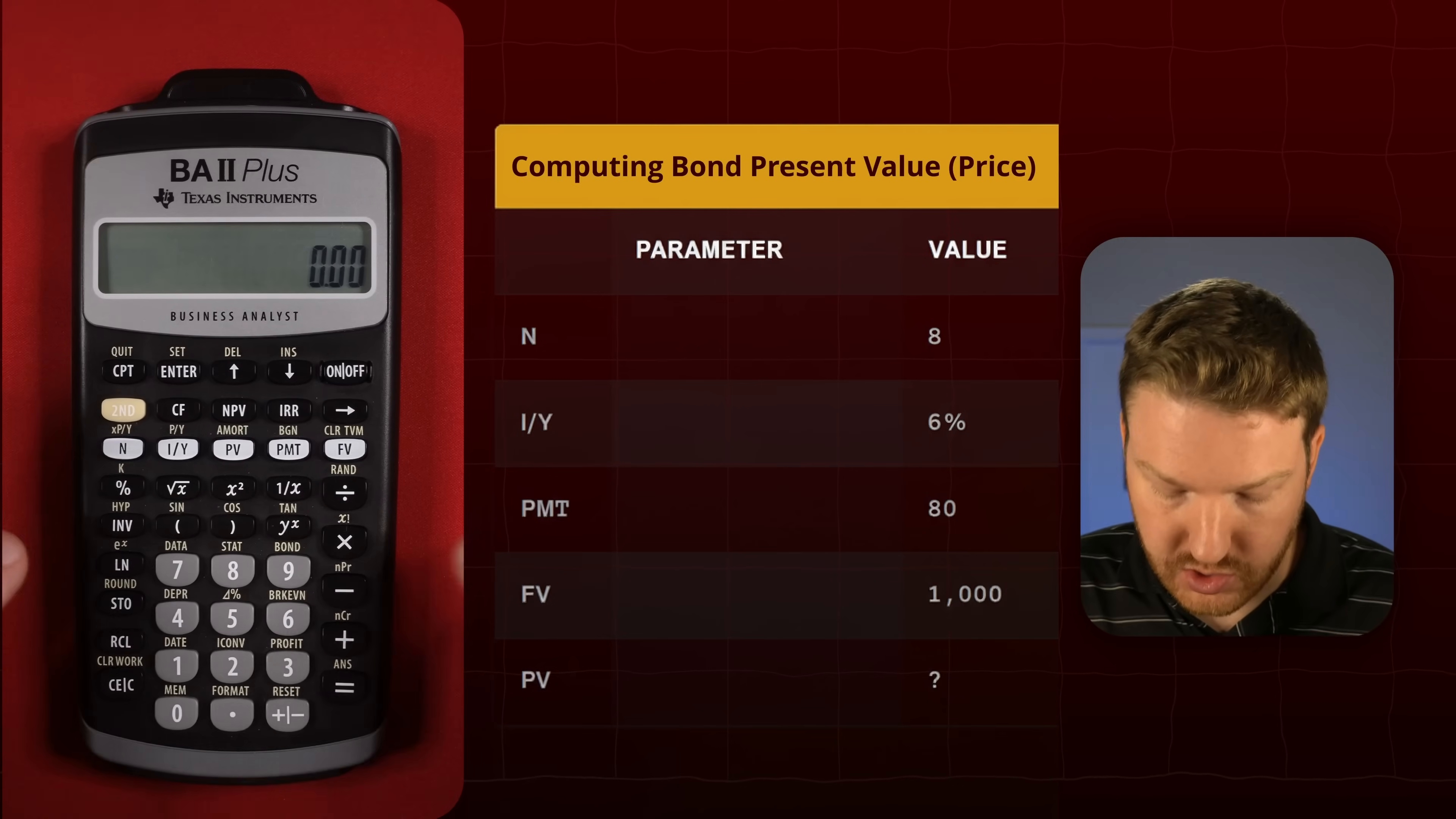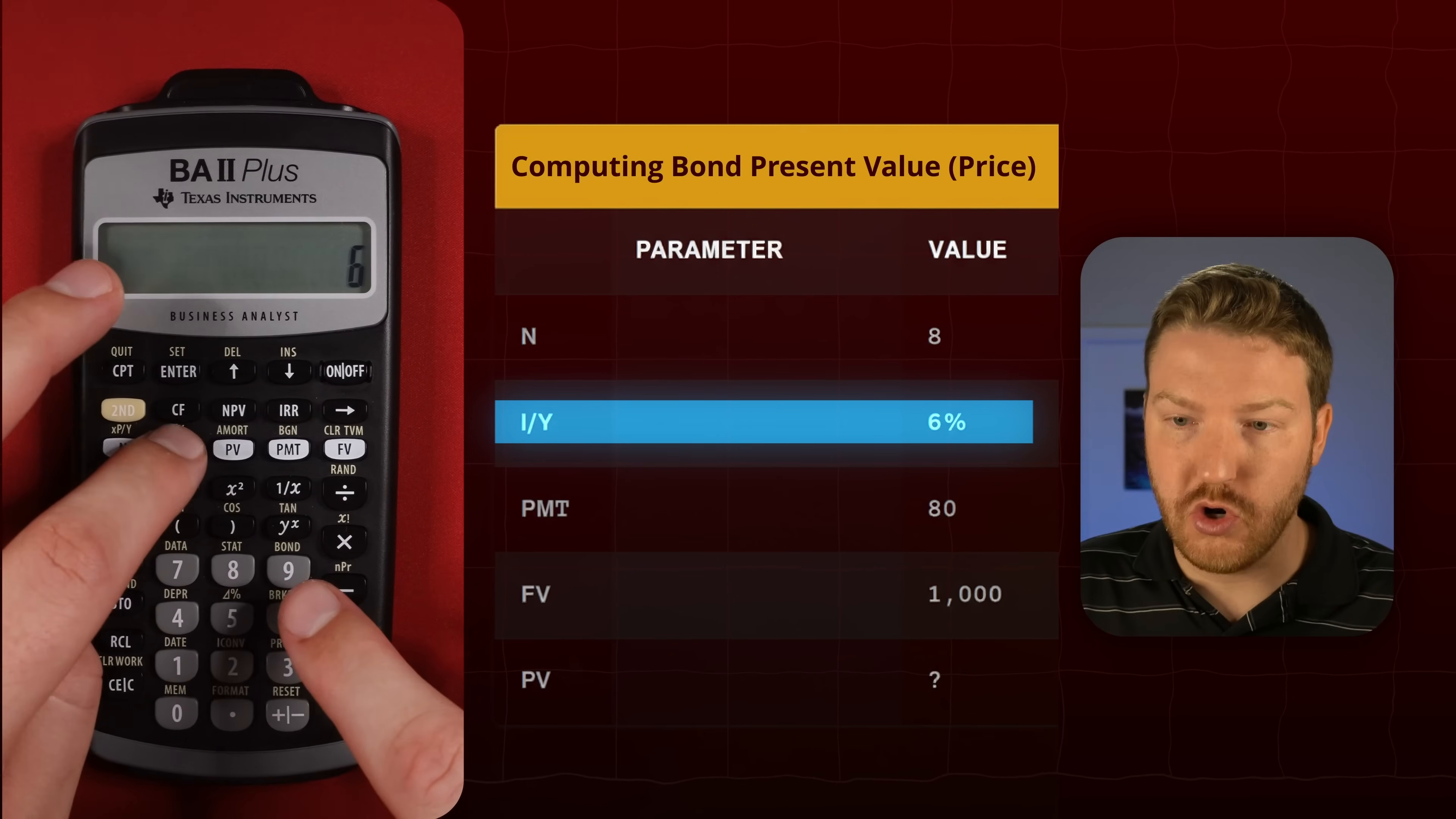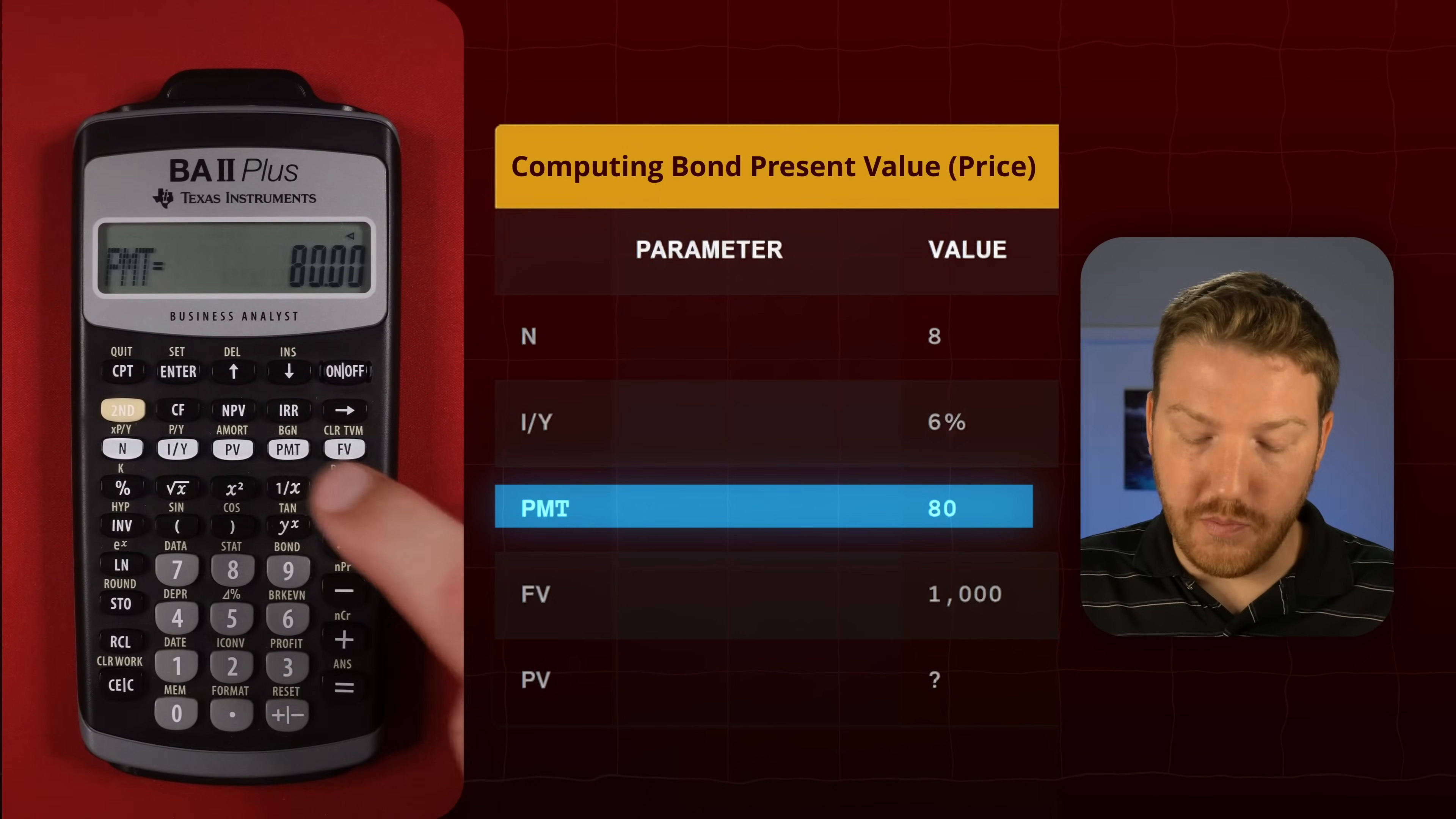So let's do an example where we assume that we have an eight-year bond, so eight is in the number of years, that has a six percent interest per year or yield to maturity, and it has an $80 coupon payment that it pays annually, so let's do 80 for payment.